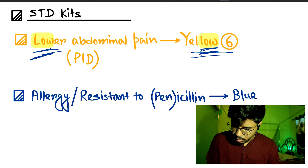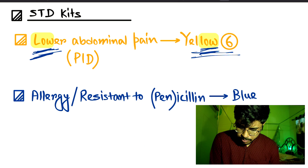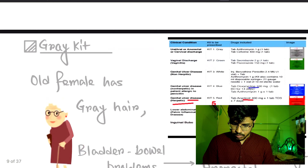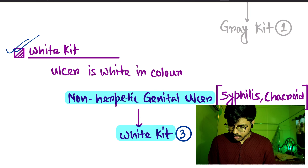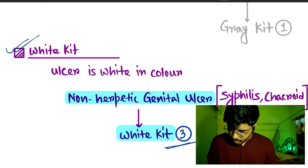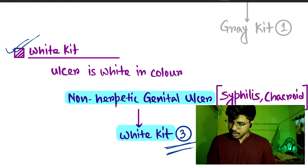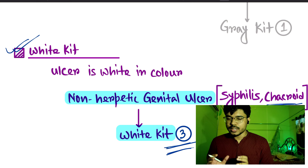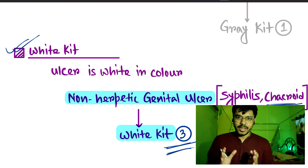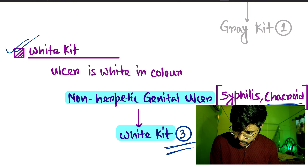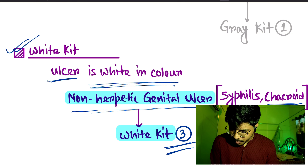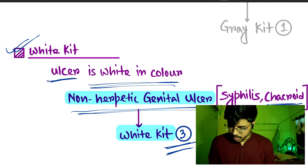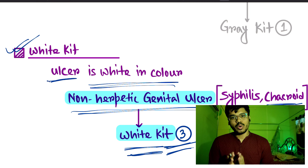White kit is kit number three. White kit is used for syphilis and suntroid, and its composition is penicillin. The white color represents the non-herpetic genital ulcer — we can also use white kit for that condition.